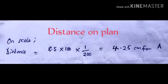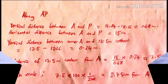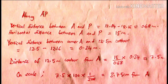The obtained distance is then used to acquire the distance on the plan by simply changing it to centimeters and multiplying by the scale as shown. We follow the same steps when finding the distance of the 12.5 meter contour from corner A along AP as shown.